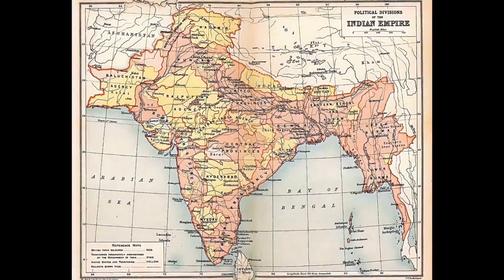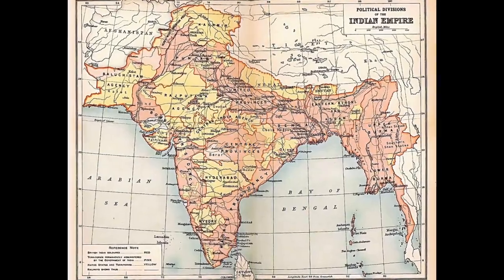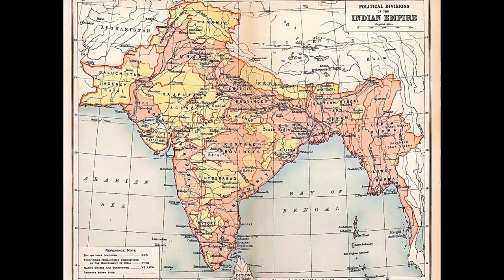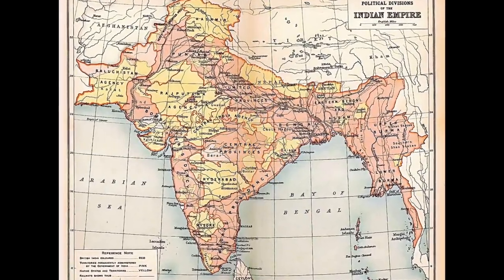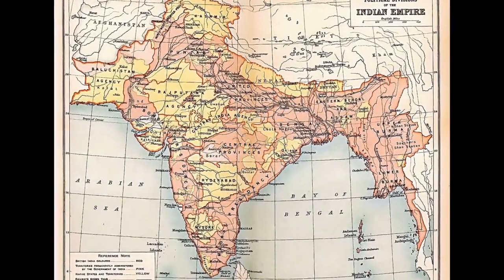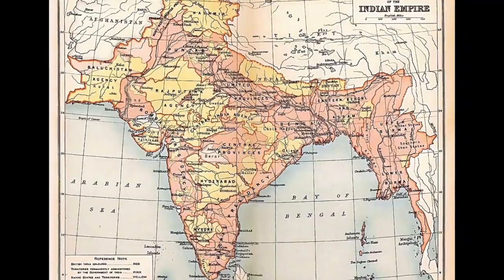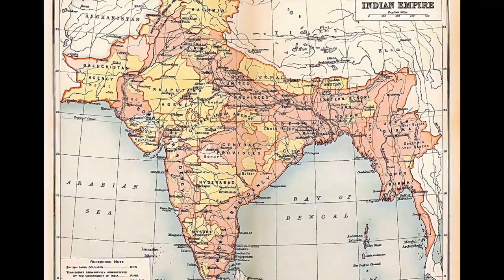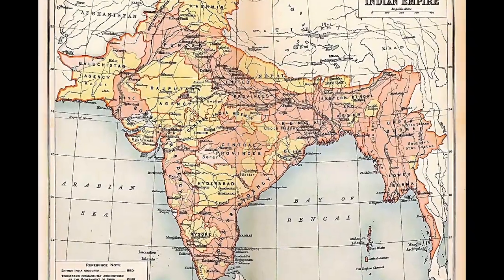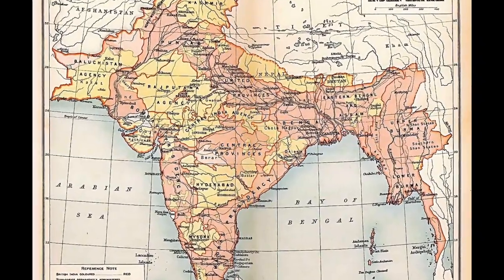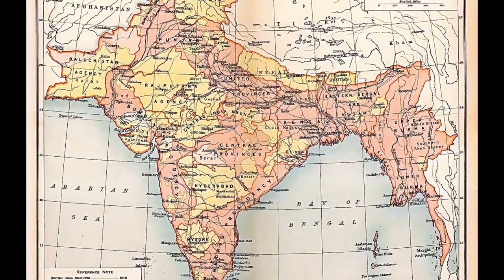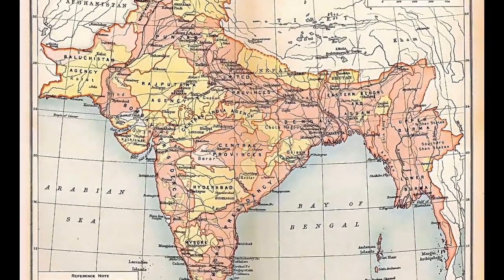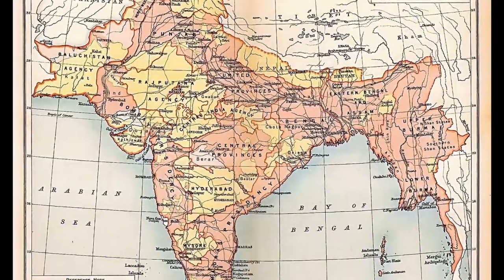And the same is largely true of India. While several regions of colonial India decided to break away and form their own nations, such as Pakistan and Bangladesh, most of them stuck together and formed the modern nation of India.